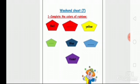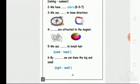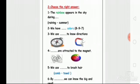All of you write the names of the colors. Turn the page. Open page 16 - now we will choose the right answer. Number one: the rainbow appears in the sky during the raining or summer? During the raining. So make a circle on 'raining'.